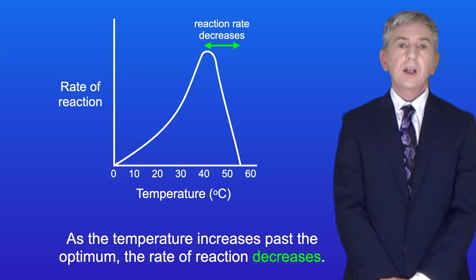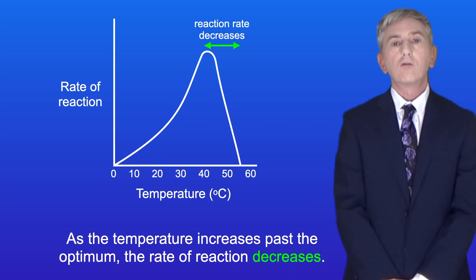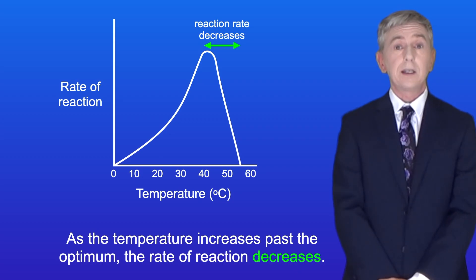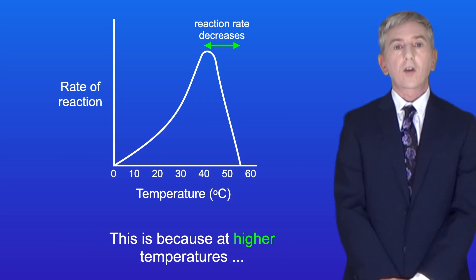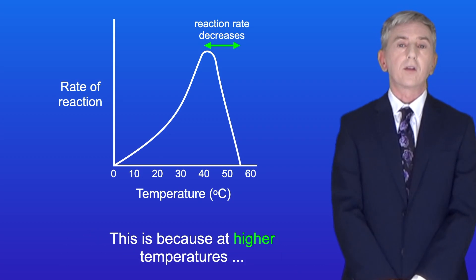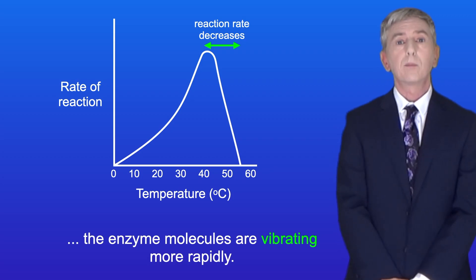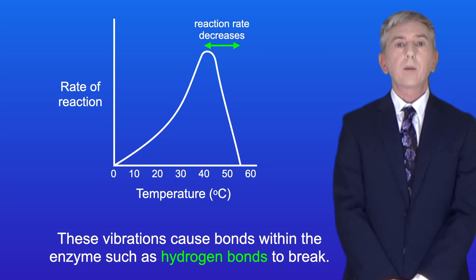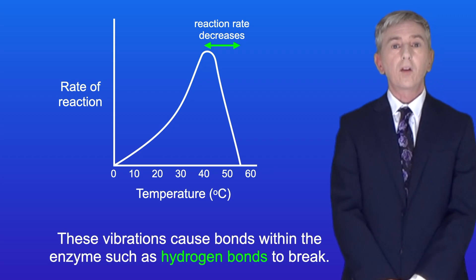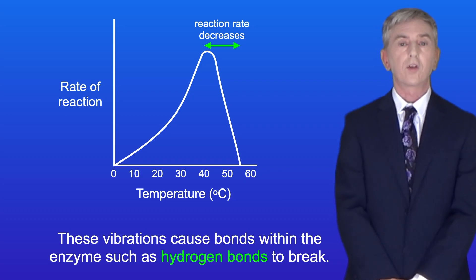As the temperature increases past the optimum, the rate of reaction decreases. This is because at higher temperatures the enzyme molecules are vibrating more rapidly. These vibrations cause bonds within the enzyme, such as hydrogen bonds, to break.